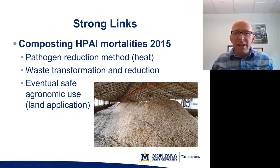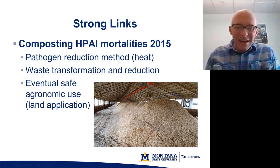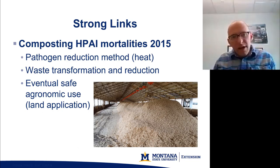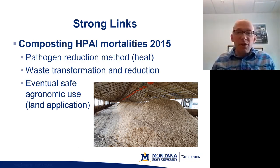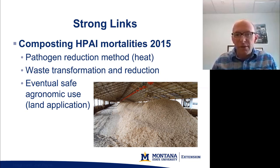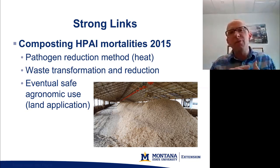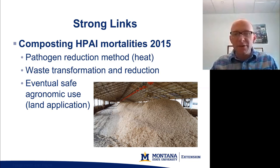Another major event was the 2015 high-path avian influenza outbreak, which resulted in mass mortalities — primarily from euthanasia, with a smaller amount directly from the disease. Euthanasia was a stopgap method to prevent further spread, but then we had to deal with all those mortalities, floor litter, and manure. Composting was implemented: the heat generated through the composting process reduced the threat of the pathogen and transformed the waste into a material that could be land applied, allowing for eventual safe agronomic use. This again drives home the strong links between biosecurity and animal waste management.